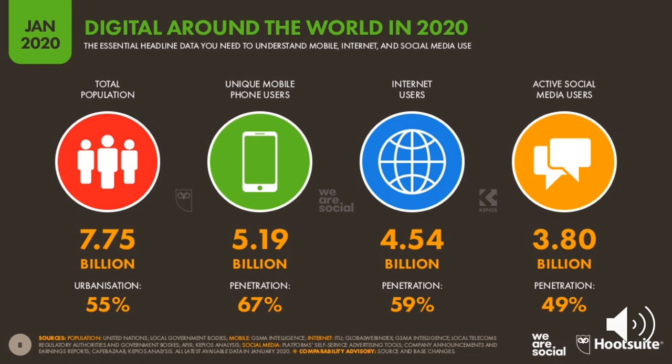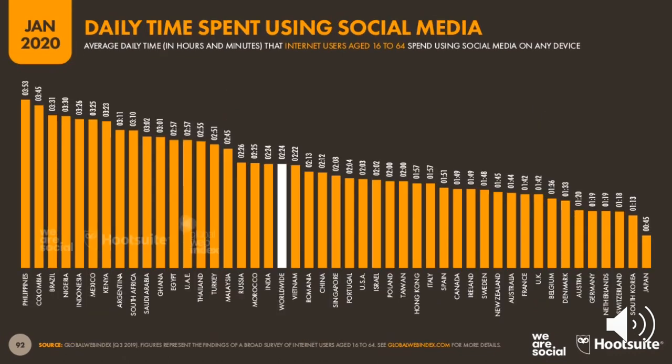How much time do people in the United States spend on social media — not Google or Amazon, just social media like Facebook, Instagram, or Twitter? You might be surprised. The US spends about two hours a day on social media, which is about 20 minutes less than the world average. Regardless, people are on there, so we have an audience we can talk to about our science.